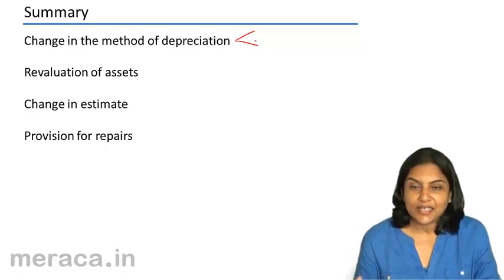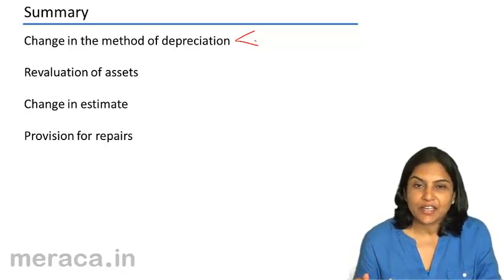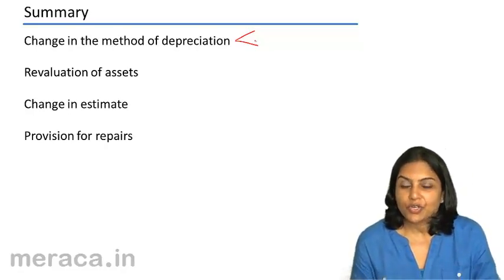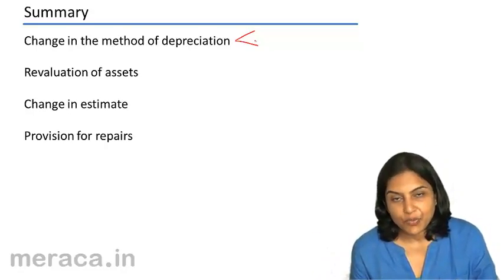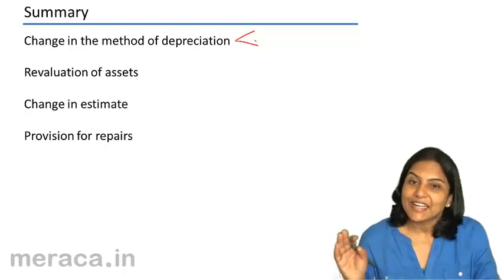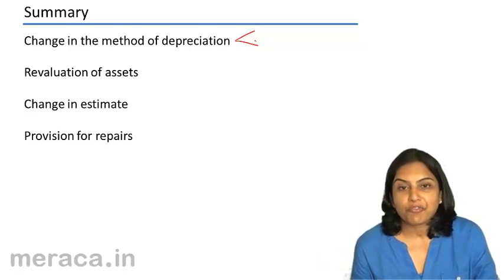then we credit the asset account and we debit the revaluation reserve account to the extent that there was an upward revaluation previously. Any difference, we would charge to profit and loss account.